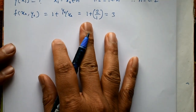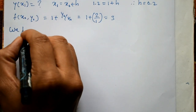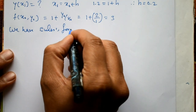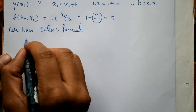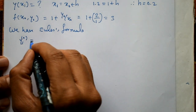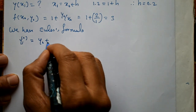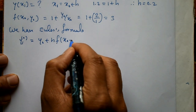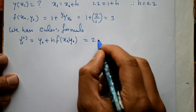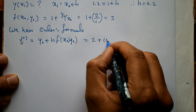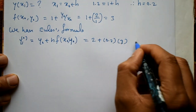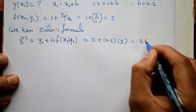First we apply Euler's formula. The Euler's formula is y1⁰ equal to y0 plus h into f of x0, y0. Substituting: y0 is 2, plus h is 0.2, times f of x0 which is 3. Multiplying and adding gives y1⁰ equal to 2.6.